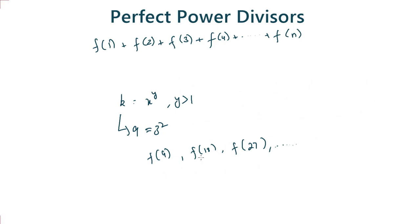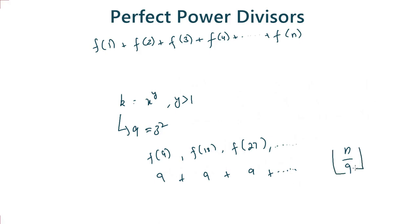Any number which is not a multiple of 9 will not have 9 as its factor. So I will be adding 9 once to each multiple of 9. Each multiple of 9 will have 9 as one of its factors, and since 9 is a perfect power, I will add 9 to every f of each number that is a multiple of 9. The number of multiples of 9 which are less than or equal to n is floor(n / 9). So the contribution of a perfect power k is k times floor(n / k).